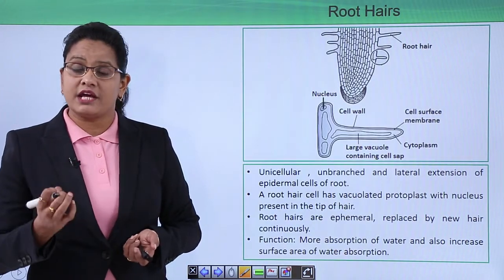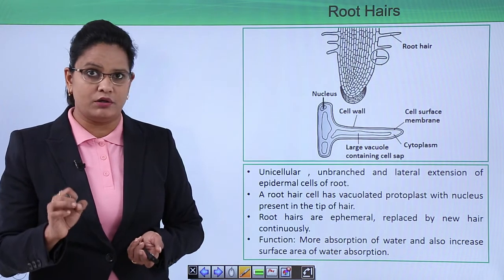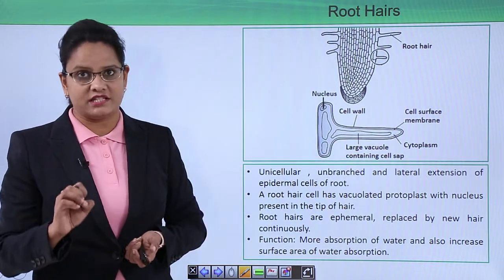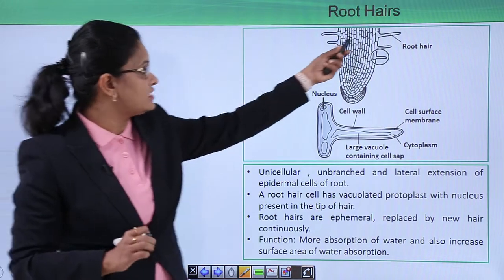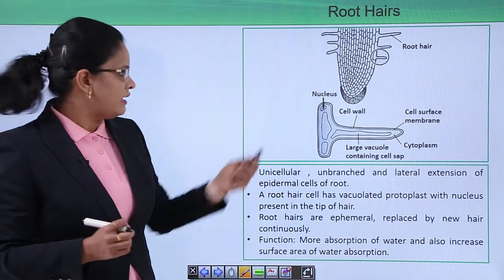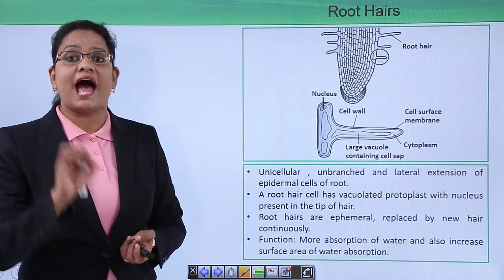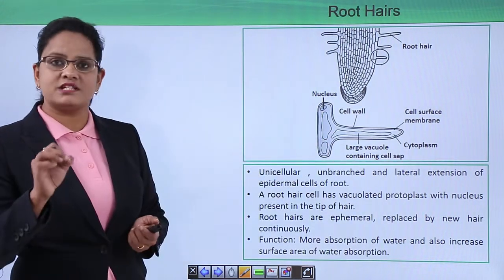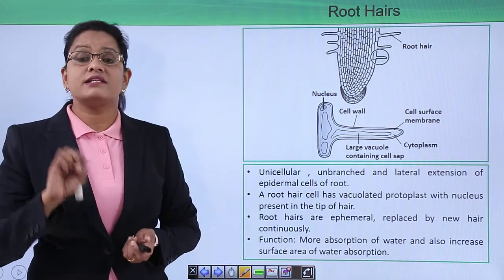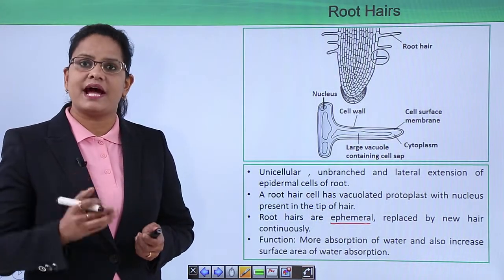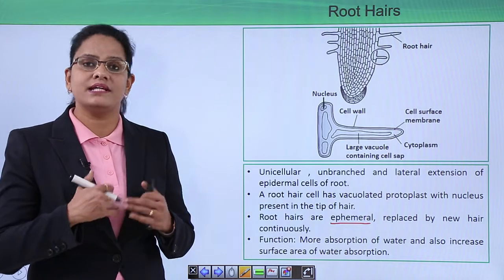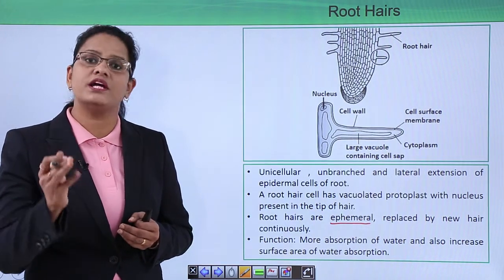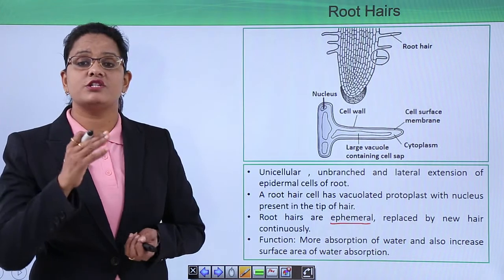Root hair are different from trichomes. They are unicellular and unbranched — trichomes can be multicellular or unicellular, but root hair are always unicellular and unbranched. They are lateral extensions of the epidermal cells of the root. The root hair cell has a nucleus at its tip and a large vacuole. Root hairs are ephemeral, meaning they keep getting replaced — they have a cycle after which they shut down and new hair grows.